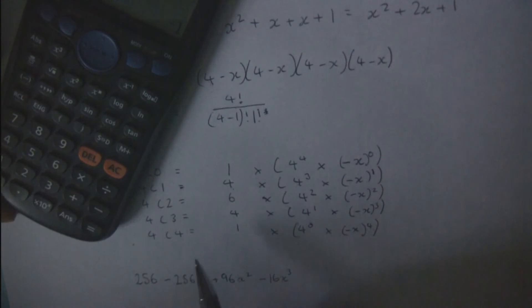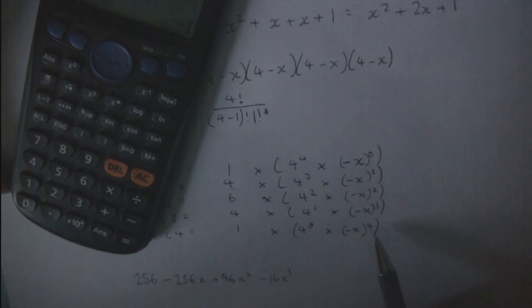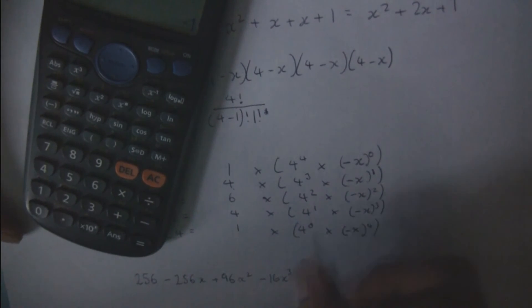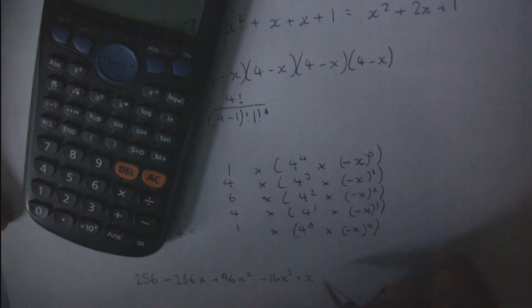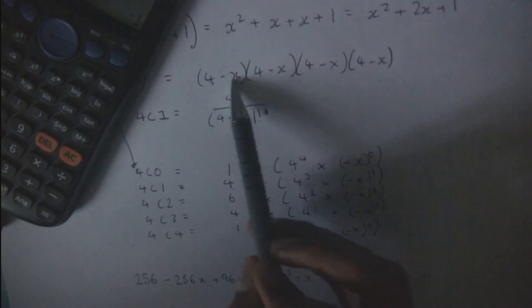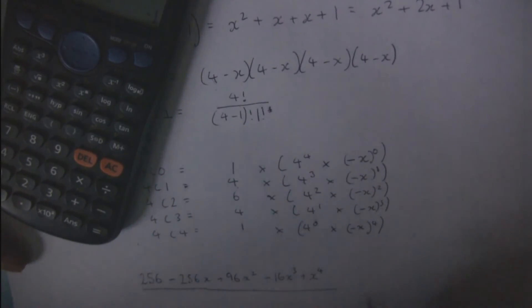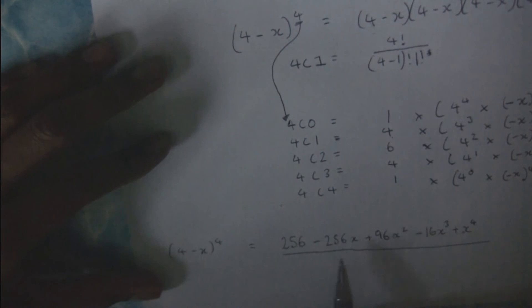Finally, the last term: 1 times 4 to the power of 0, which is 1, times (minus 1) to the power of 4 — which is minus 1 times minus 1 times minus 1 times minus 1, giving positive 1 — times x to the 4. So you end up with plus x to the 4. Therefore, (4 minus x) to the power of 4 equals 256 minus 256x plus 96x squared minus 16x cubed plus x to the 4.